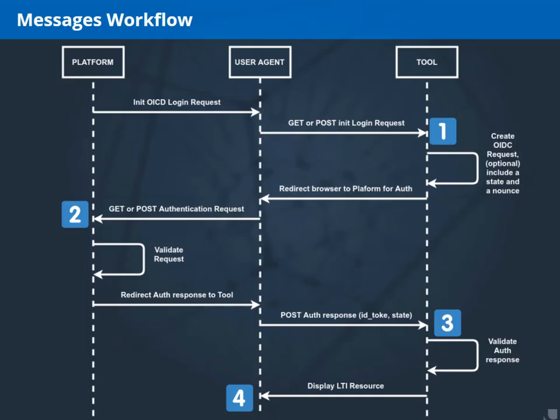In this workflow, we can see the platform, the tool, and the user agent — that is, the browser. The browser will usually just redirect the request and keep some session values. All this process starts with a user that wants something from the platform. The user clicks a link, and then the platform prepares a first message called the OIDC login request. This message will contain some information that will be returned later to the platform so it can remember this request.